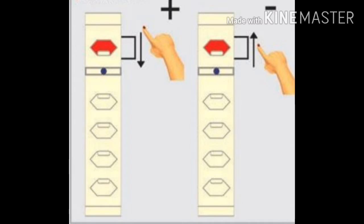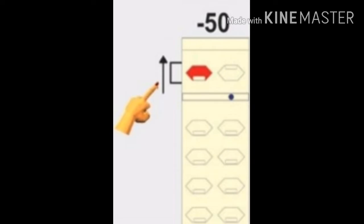As you can see in the plus part. Now for 50, if you have to add 50 then you have to put the bead down. And if you have to minus 50 then you have to put the bead up. This is the tens rod.